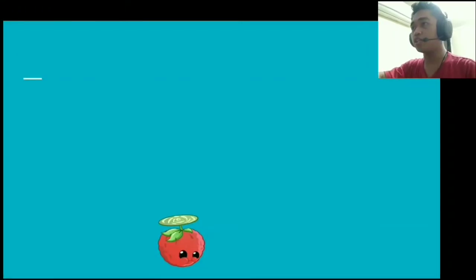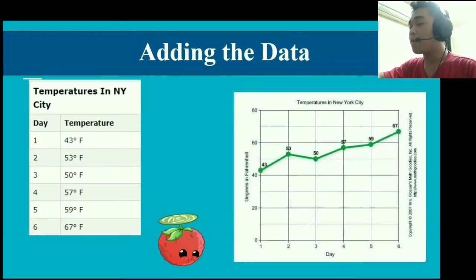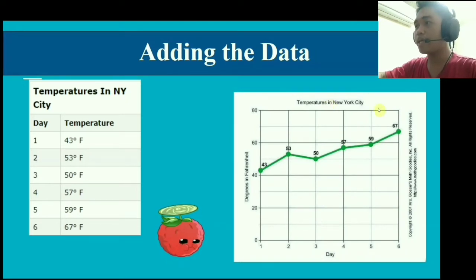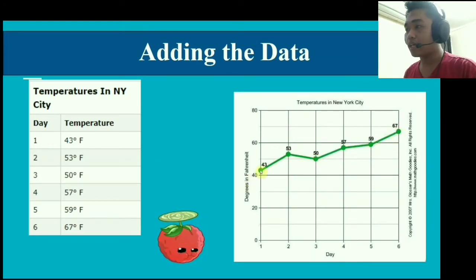After writing the scale that shows the interval, we add the data. But which data do we add and how do we add the data? The data that we'll be adding would be the data that we have collected and put in the table. In the table right here on the left, we have the day and its corresponding temperature. We can add the data by putting the points on the graph, much like how we find the coordinates in a Cartesian plane.